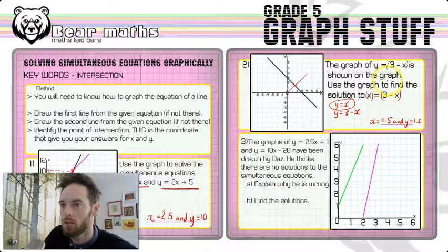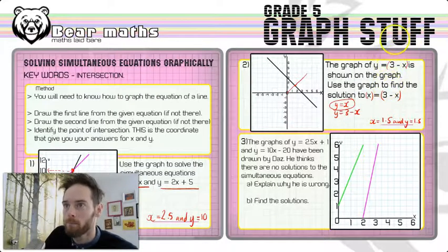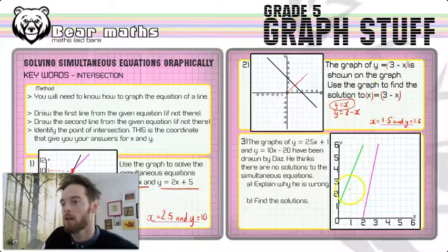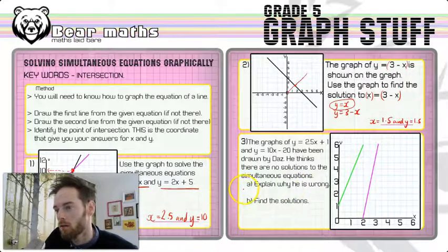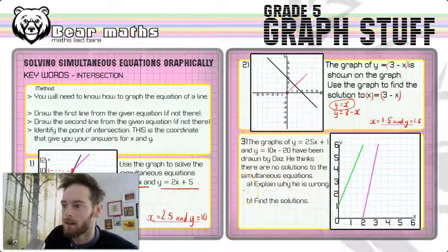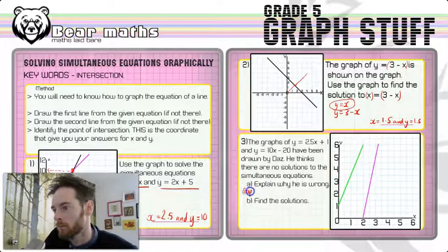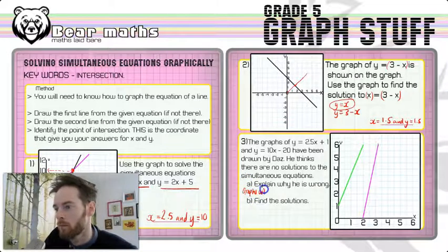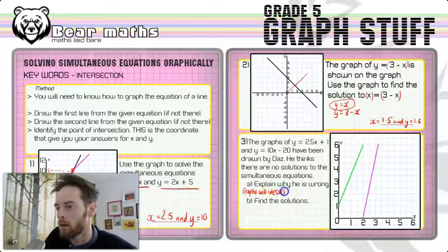So the lines will continue, and let's think about the green one going all the way up there and the purple one going all the way up there. And that is where we're going to get our solutions. So he is wrong because the graphs will intersect at some point. Graphs will intersect as they're not parallel.